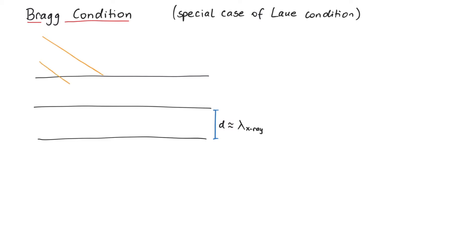Let us draw the incoming x-rays under an angle of theta. For simplicity, we assume them to be monochromatic, that is, they have one sharp frequency or wavelength. Outgoing waves will exit the crystal again under the same angle theta.